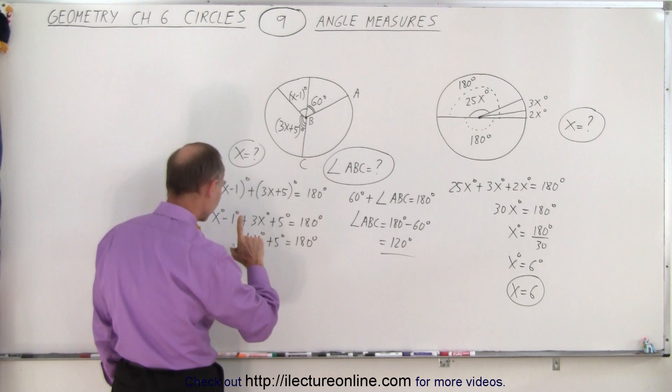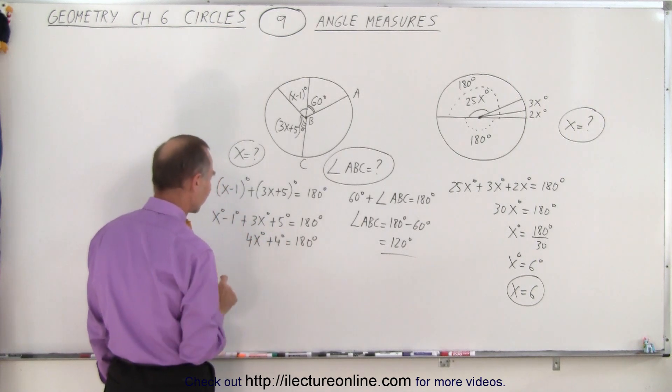And then we can combine these: 1x plus 3x which is 4x degrees, and that plus—not 5, 4 because it's 5 minus 1—4 degrees.